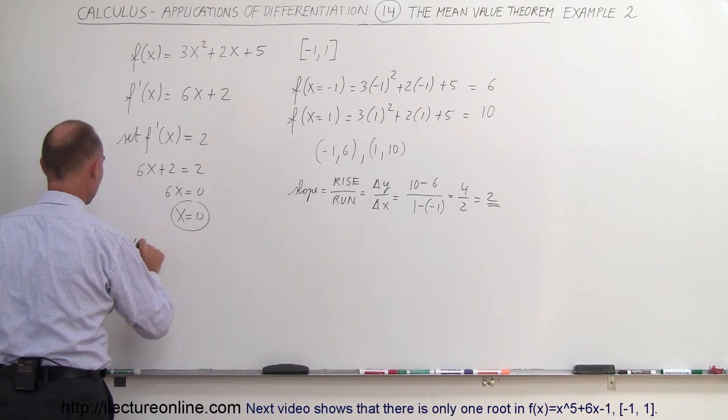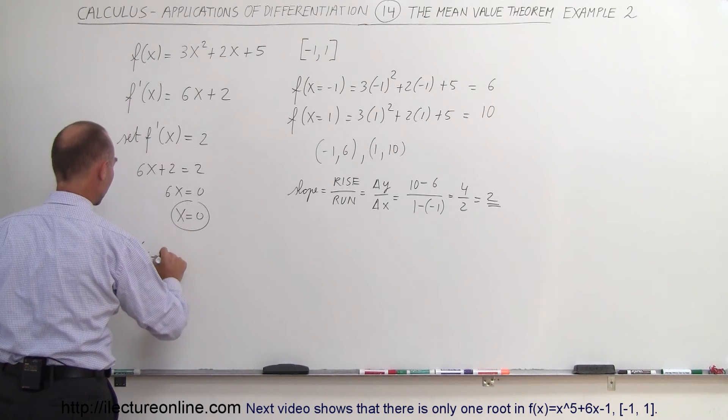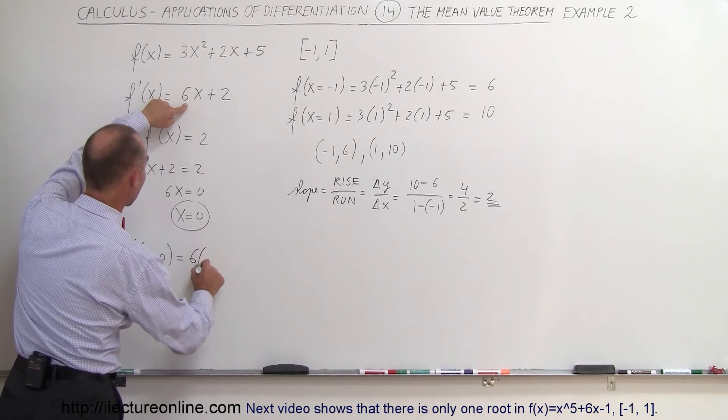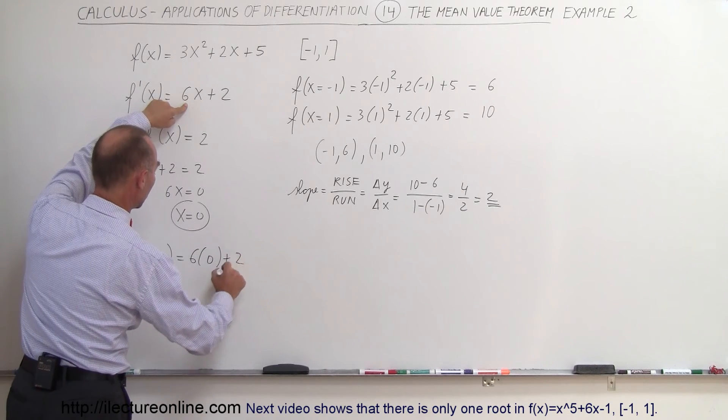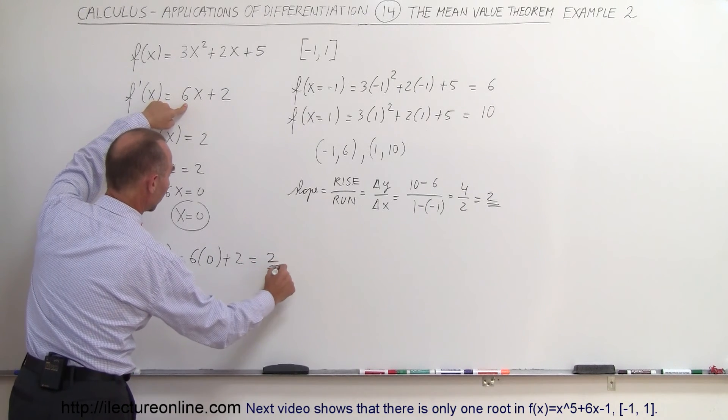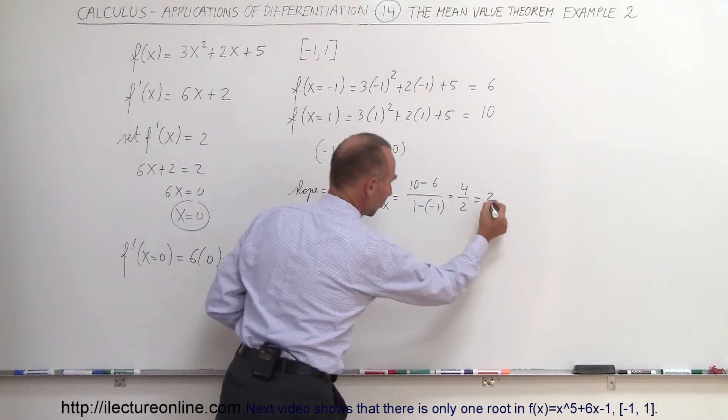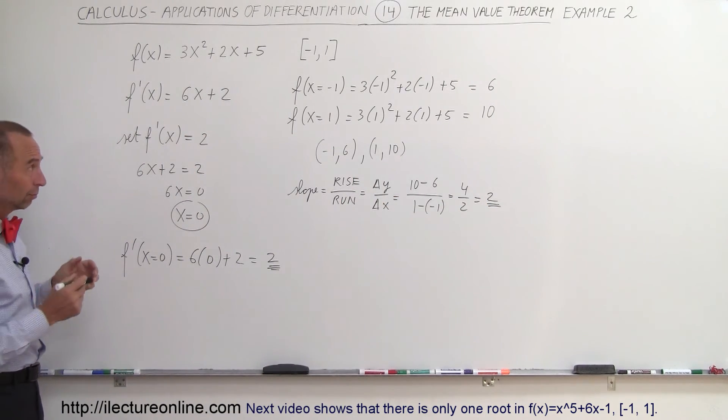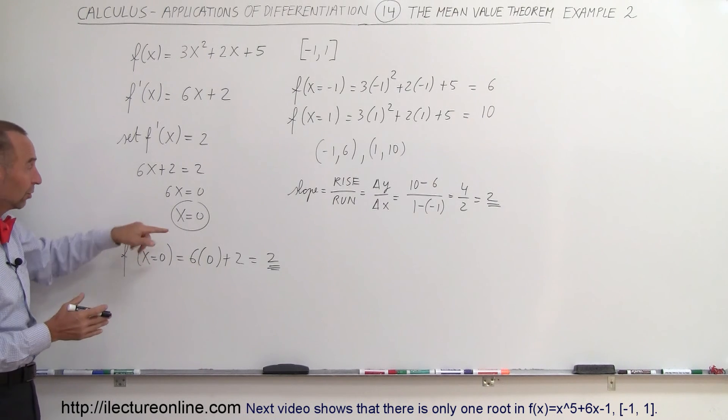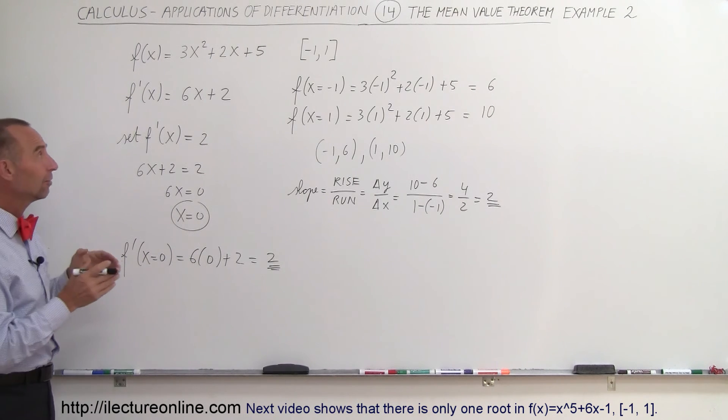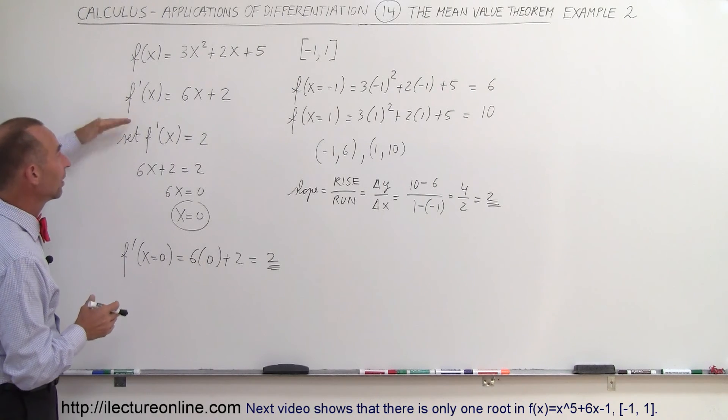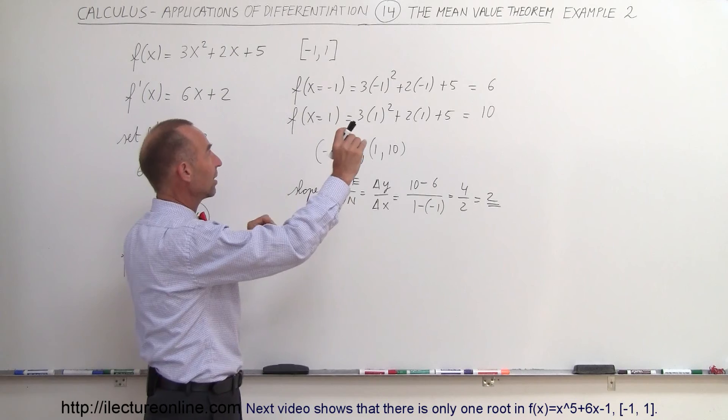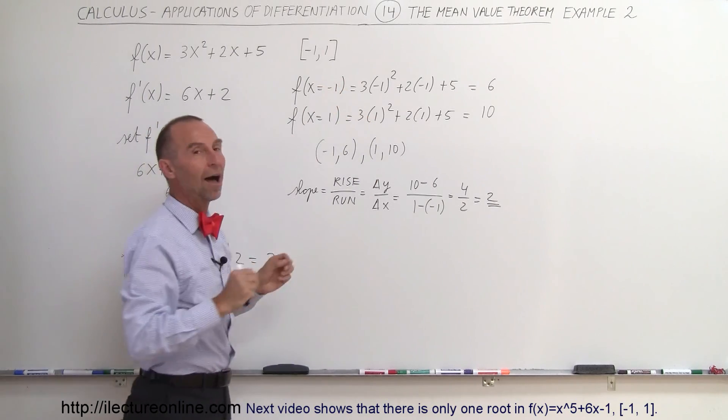So now we're going to evaluate f prime when x is equal to 0. Here's the derivative, so it would be 6 times 0 plus 2, which is equal to 0 plus 2 or 2. And notice we get the exact same slope as we got over there. So that value between negative 1 and 1, which in this case is 0, gives us the exact same slope when we take the derivative as we get when we take the slope of the straight line connecting the two points on the graph.